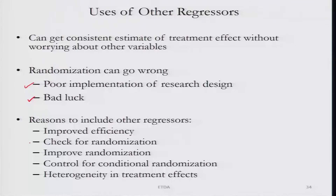If we hit bad luck or have a poor implementation of the research design, then we cannot compare treatment and control group outcomes and say that this is indeed the true effect of the treatment. In that case we do need other regressors — the x_not_i's — to see whether they are balanced between the treatment and control groups, and then we can be more confident that the randomization went well. The collection of data on x_not_i's helps us improve randomization because if they are balanced, we know that we have a proper randomization.